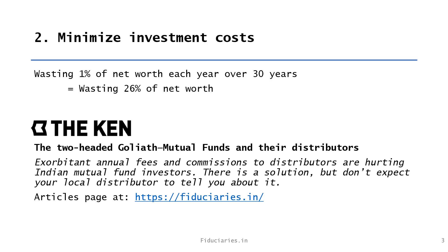The second approach is to minimize investment costs. Most people think it is okay to pay high fees to a fund manager, distributor, or RIA in the hope that they will do much better than the market. Followers of the mature approach know that matching the market return is all one can hope for, and paying high fees to try to beat the market will just damage your net worth. Investors often waste 1% of their net worth each year on high fees. When accumulated over 30 years, any calculator will show that such an investor would have lost 26% of their net worth.